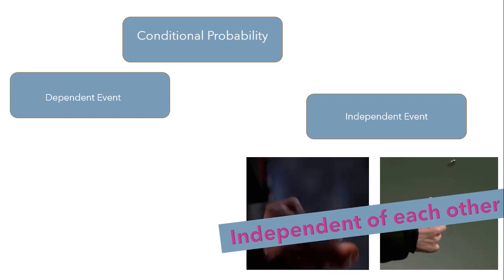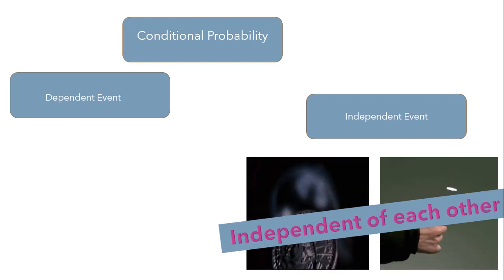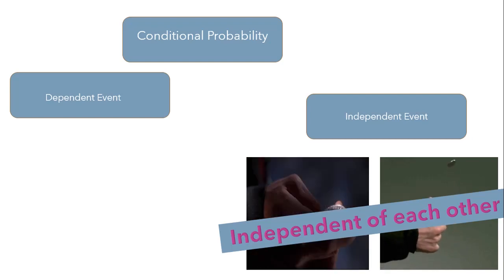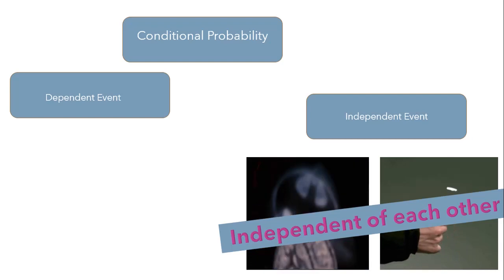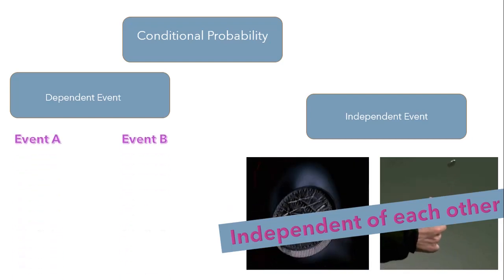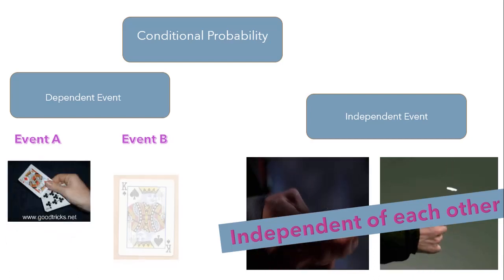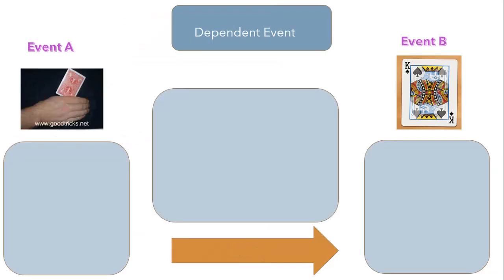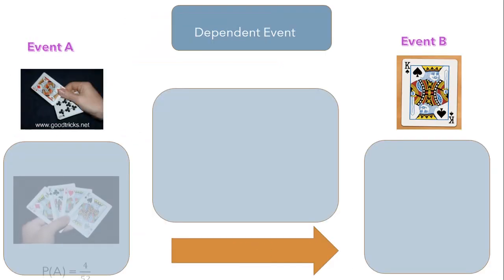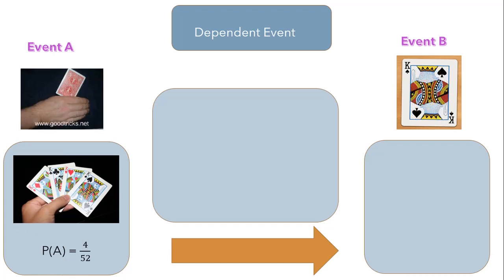But if the current event is affected by a previous event, then that will be categorized as a dependent event. Let's understand this with one real-world scenario. Suppose we have two events — event A and event B — where event A is drawing a king first from the deck of cards, and event B is drawing a king second. For the first card, the chance of drawing a king would be 4 out of 52, as there are four kings in a deck of 52 cards.